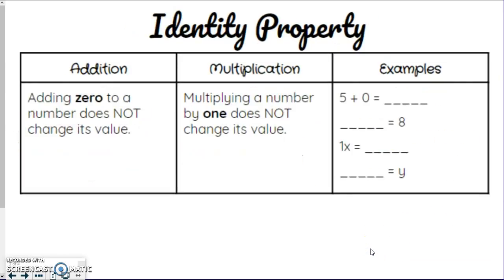One more here. This is the easiest one, and you already knew how to do this. You just didn't know what it was called. So this one's called the identity property. So with addition, it's adding 0 to a number does not change its value. So basically, you add something by 0, and it stays exactly the same. Multiplication, same thing, except it's multiplying a number by 1 does not change the value. Multiplying by 0 does change it, right? It goes from like 5 times 0 is 0, but we want 5 times 1 gives us 5. Doesn't change. Starts as 5, ends as 5.